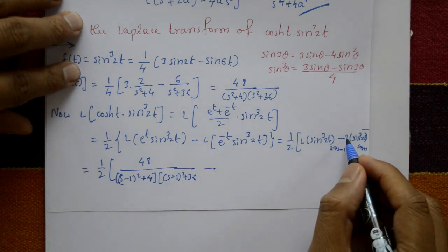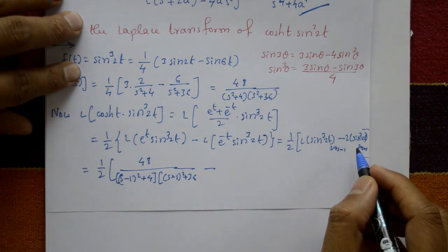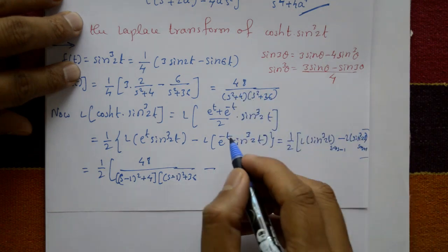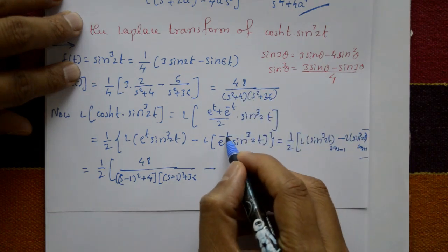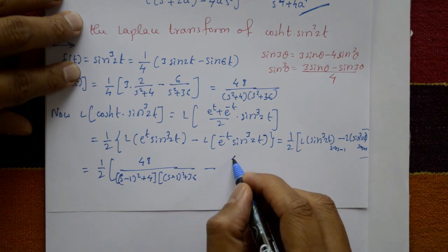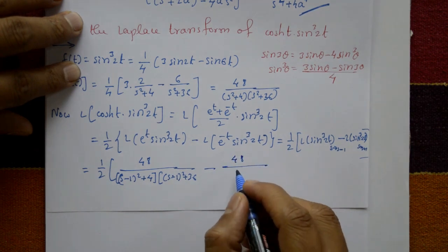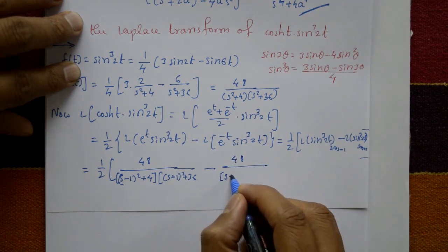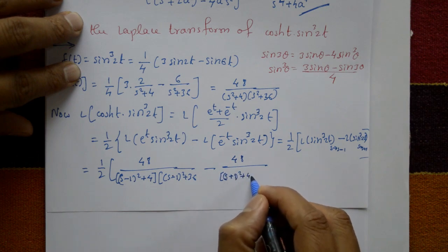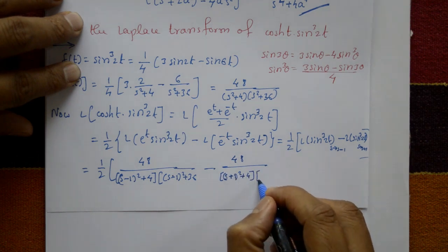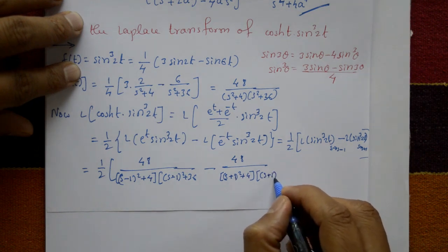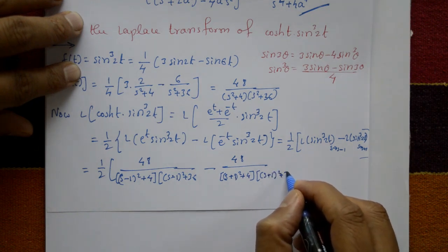For the second term with e⁻ᵗ, s becomes (s+1). So we subtract 48 / [(s+1)²+4]·[(s+1)²+36], which equals 48 / [(s²+2s+5)(s²+2s+37)].